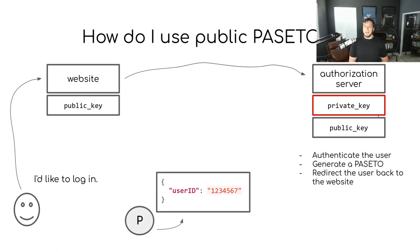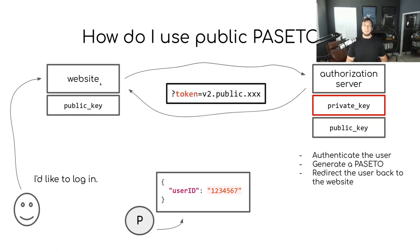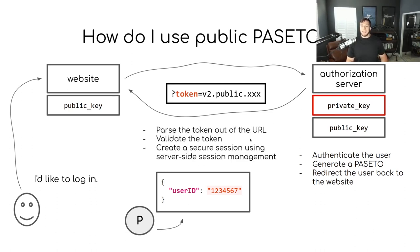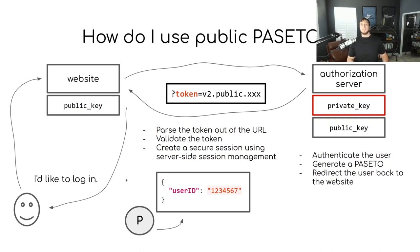Once the user is authenticated, the authorization server will generate a PASETO. Maybe it contains something like a session identifier — in this example, a user ID, though in the real world you'd use something more opaque. The authorization server then redirects the user back to the website with this PASETO token in a query string parameter. The website parses the token from the URL, validates it using the public key it already has, confirms the token was generated by the trusted authorization server, and then creates a secure server-side session with a cookie to keep the user logged in.